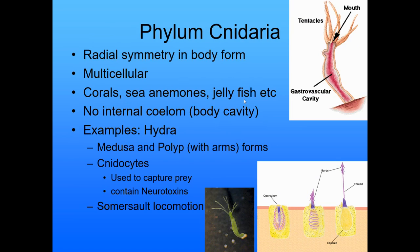One of the examples we're going to look at is from the phylum Cnidaria — the hydra. They have radial symmetry in their body form and are multicellular. Members of that phylum include corals, sea anemones, and jellyfish. They don't have an internal coelom, meaning they don't have a true body cavity.